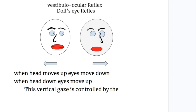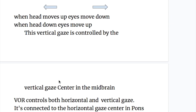Similarly, when the head moves up, eyes move down. And when the head moves down, eyes move up. This vertical gaze is controlled by the vertical gaze center in the midbrain by the rostral interstitial nucleus of medial longitudinal fasciculus.